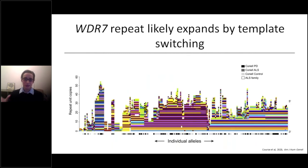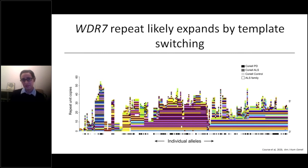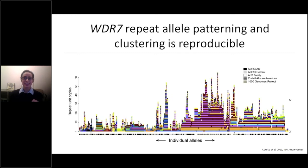We learn a lot from that plot, seeing patterns that suggest how this repeat expands. However, we wanted to know if repeating this analysis in a more diverse cohort would reveal the same patterns. The original cohort was largely from samples of self-reported European ancestry and filtered for larger sizes. Using Thousand Genomes Project samples and others to increase diversity, and without filtering for size — so including shorter repeat expansions — we find all the same patterns appear again. This is reproducible.